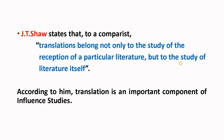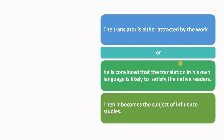In influence studies, scholars who read a classical masterpiece in a foreign language are influenced by that particular work of art, and they feel they must make their people aware of the masterpiece — so they go for translation. The reason a translator translates a work is either because he is attracted to it, or because he is convinced that the translation in his own language is likely to satisfy native readers who do not know the source language. Thus it becomes a subject of influence studies.